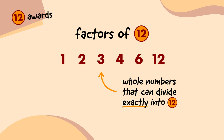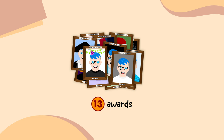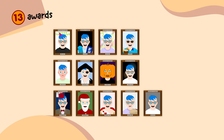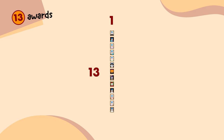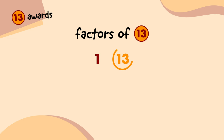What about if I had 13 awards to arrange into equal rows? Well, I can't do 2 rows, 3 rows, 4 rows, or 6 rows. There's only one option: one row of 13. We could of course do 13 rows of 1 as well, but that's the same thing. That means the only factors of 13 are 1 and 13 itself. If a number has exactly 2 factors, it's called a prime number.